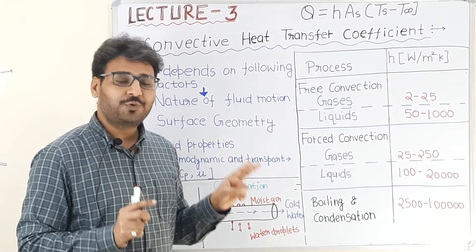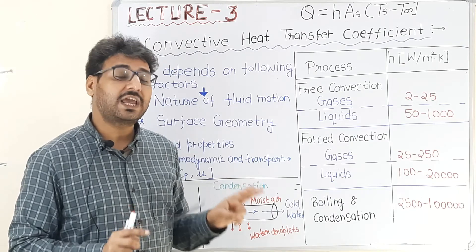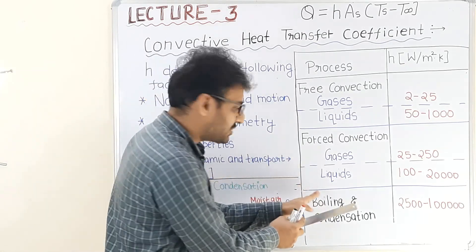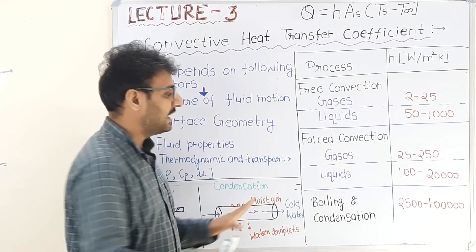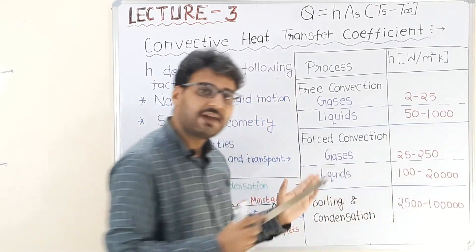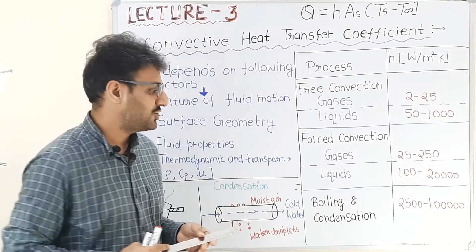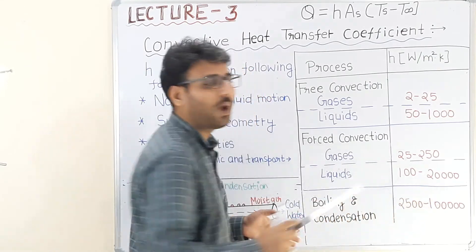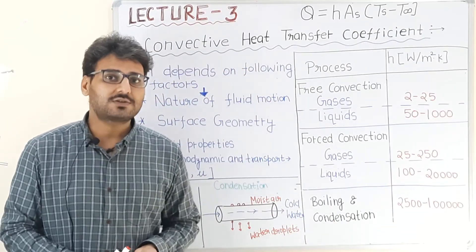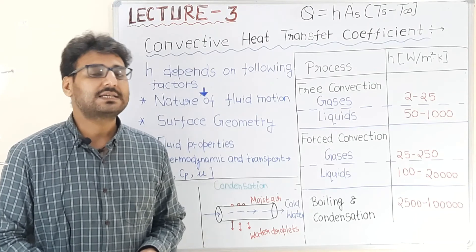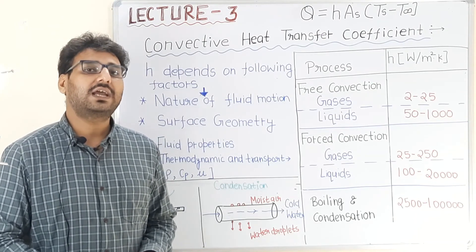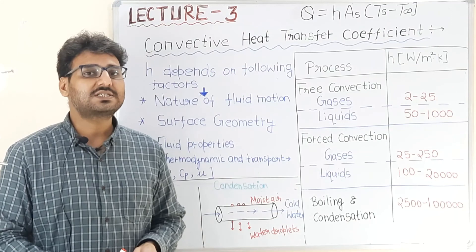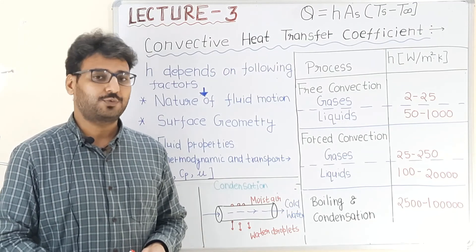I will discuss boiling and condensation processes in detail in Unit 5, taking two lectures for each topic, and will explain why the h value is so high — it is between 2500 to 1 lakh. Now we will stop here and discuss the third and last mode of heat transfer, which is radiation, in the next lecture. Thank you.